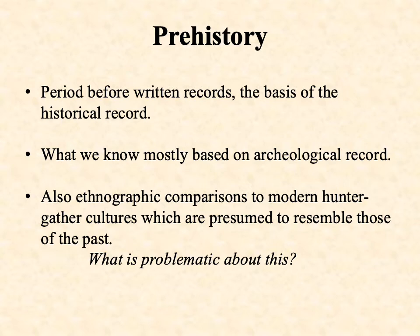As we go along in this course, we'll periodically discuss how historians use written documents. But if you go back far enough, we come to a period before written records, and thus we have the term prehistory. There are other sources of information that historians continue to use, but if you go back far enough, you have no written records. What we know then is based primarily on the archaeological record — the physical remains left behind related to human activity.